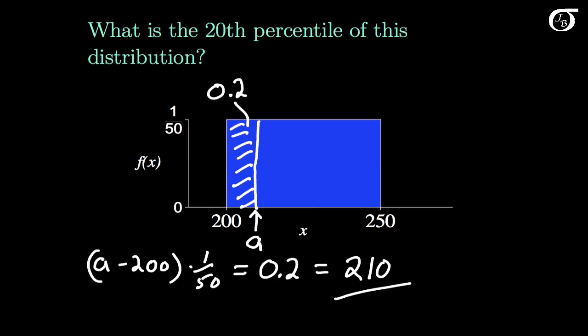For other continuous probability distributions, it's not going to be quite so easy to find areas and percentiles — we'll need to use calculus and integrate the probability density function. But for the continuous uniform distribution, it's fairly straightforward as this reduces to simple areas of rectangles.